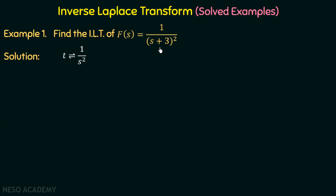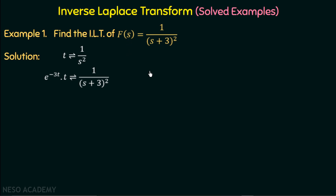If we have shifting in the frequency domain, then an exponential function is multiplied in the time domain. We need to multiply e to the power minus 3t in the time domain, because we are shifting the function to the left by a factor of 3 — the plus 3 in the denominator gives e to the power minus 3t. Therefore, the inverse Laplace transform of 1 over (s+3) whole square is t·e^(−3t). Example 1 is complete.